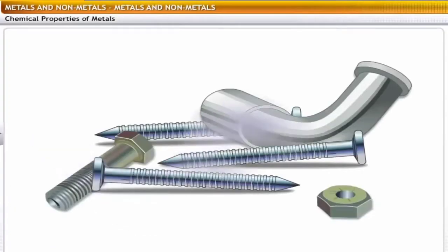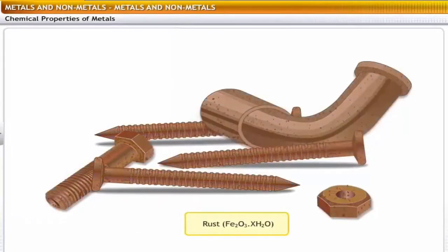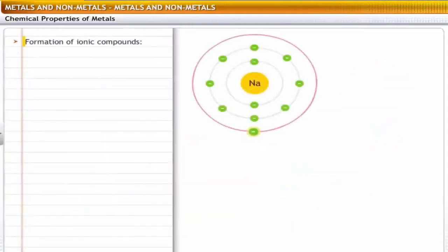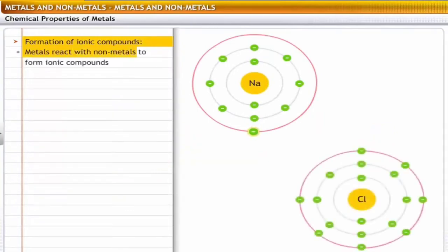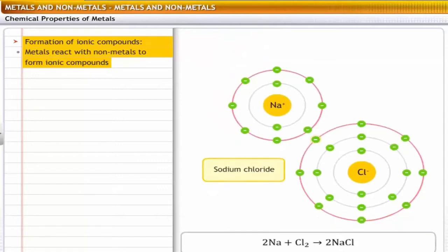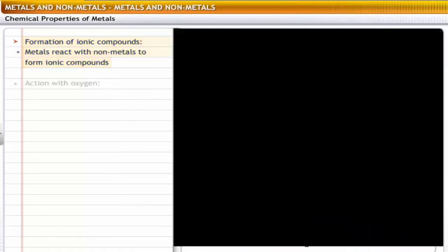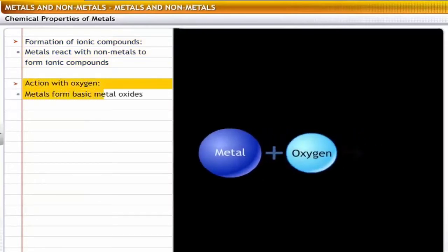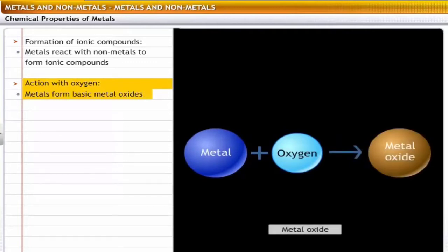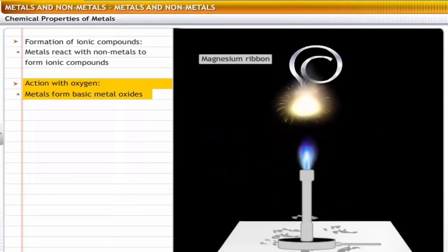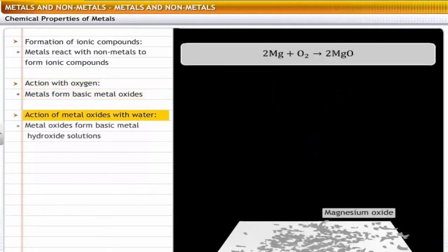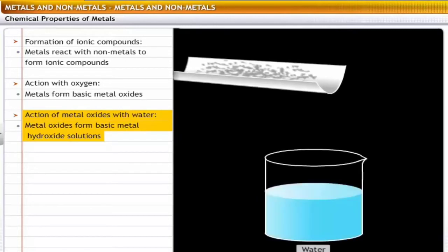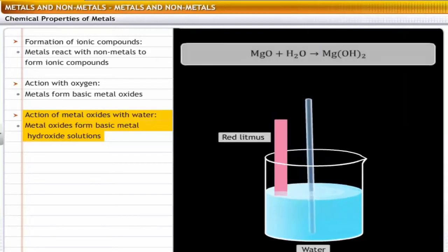Iron rusts because it reacts with moisture to form iron oxide, commonly known as rust. Metals react with other elements in a variety of ways. Formation of ionic compounds: metals lose electrons to non-metals to form strong ionic compounds. For example, sodium loses electrons to chlorine to form sodium chloride. Action of metals with oxygen: metals burn in the presence of oxygen to form metal oxides, which are basic in nature. For example, a magnesium ribbon burns in oxygen to form magnesium oxide. Metal oxides dissolve in water to form basic metal hydroxide solutions. For example, magnesium oxide dissolves in water to form a strong basic solution of magnesium hydroxide.